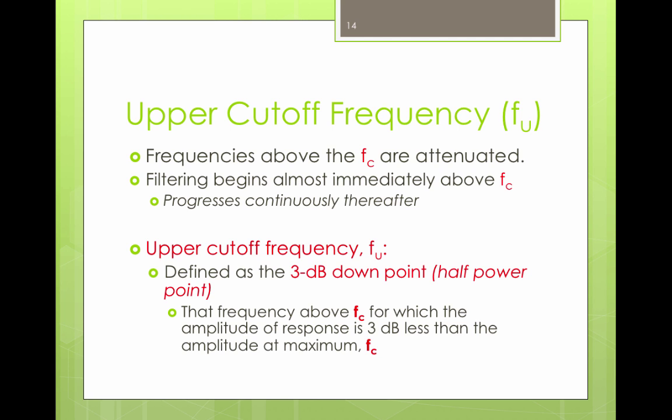Then we have the upper cutoff frequency, the FU, frequencies above the FC that are attenuated. The filtering begins almost immediately after the FC. So it's the three dB down point from the very top of the filter going down three decibels, the cutoff point for the upper limit of the frequency filter.